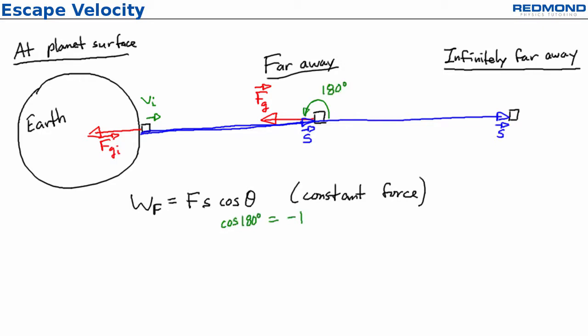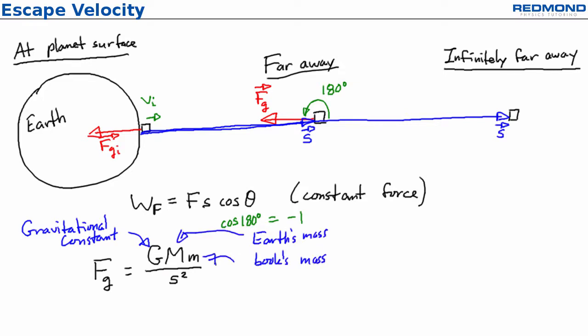Unfortunately, the force of gravity is not constant. It depends on the distance from the Earth's center according to the formula FG is equal to GMm over s squared, where G is the gravitational constant, big M is Earth's mass, little m is the book's mass, s is the distance from Earth's center to the book, and FG is then the magnitude of the force of gravity between Earth and the book.